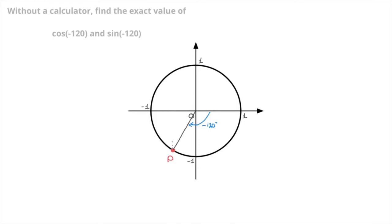By definition, point P has coordinates cosine of negative 120 and sine of negative 120. And now, as always, we make a note of the angle that separates point P from 180 degrees. Since we went through 120 degrees clockwise to get to P, there will be 60 degrees left to get to 180. So I can add that to our unit circle right there — that's 60 degrees.